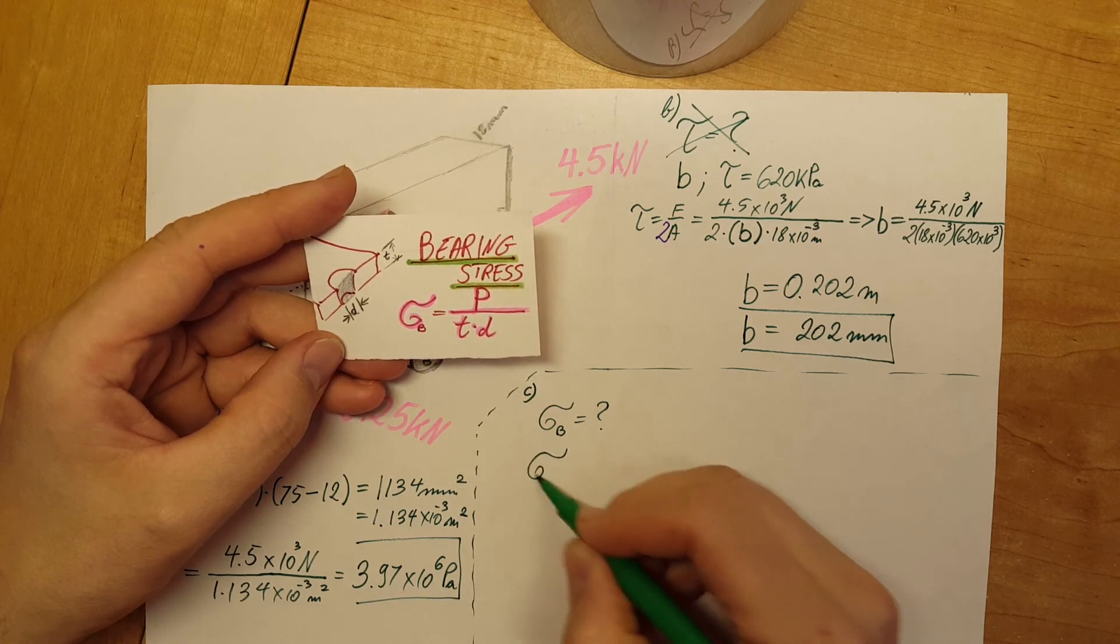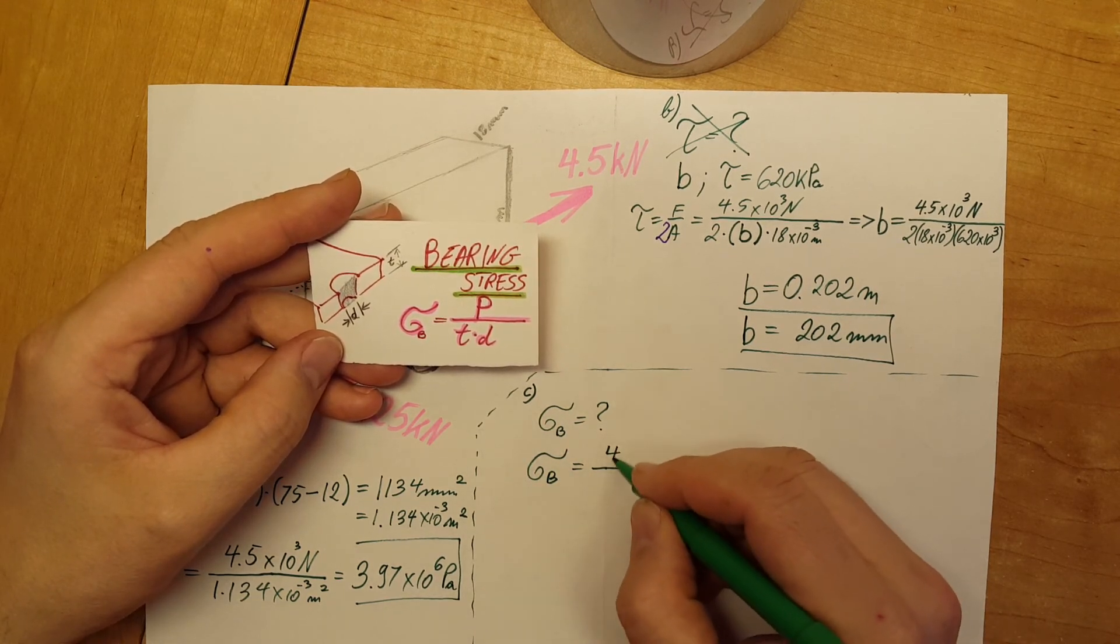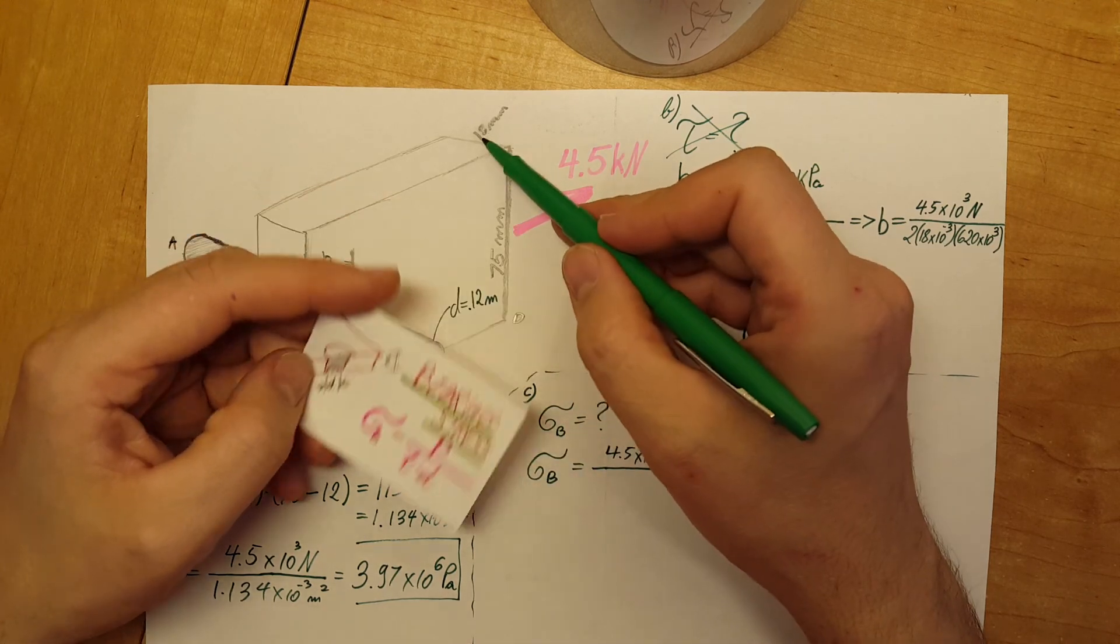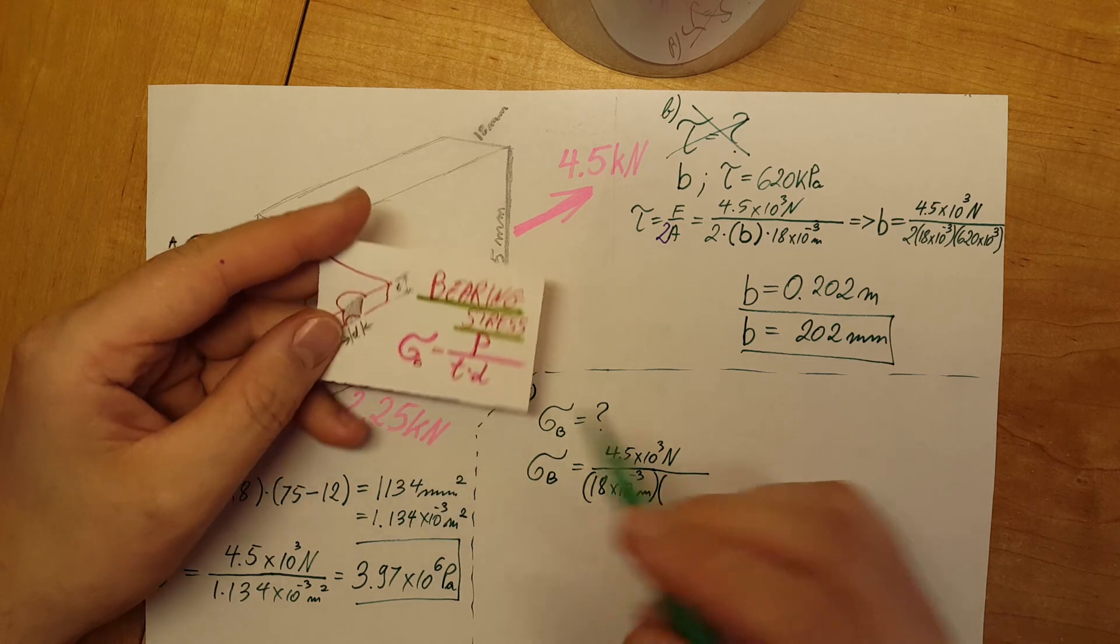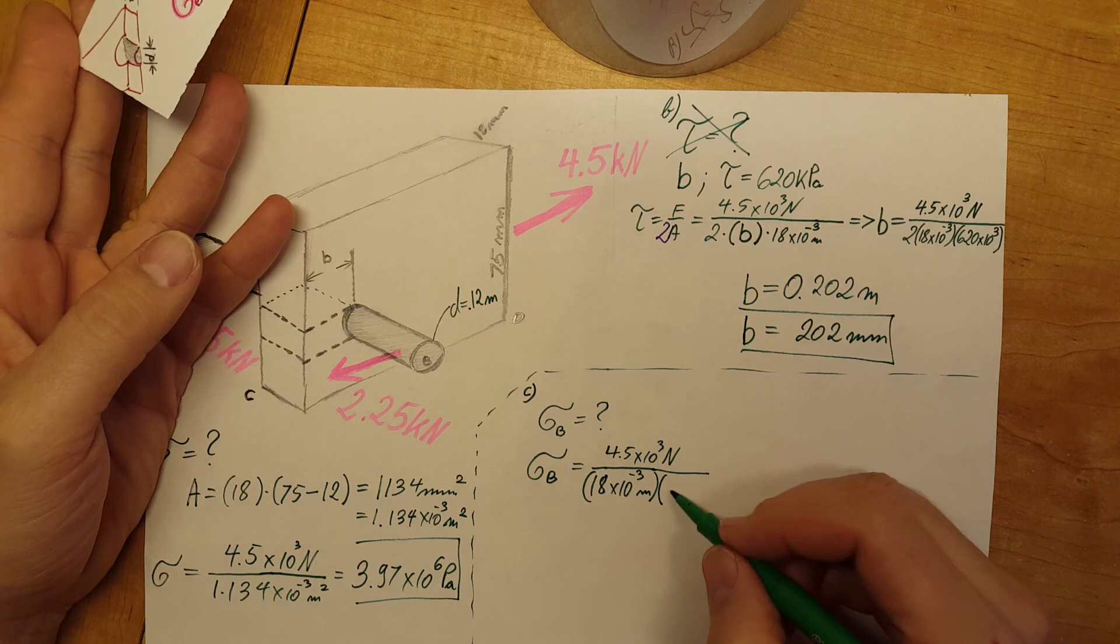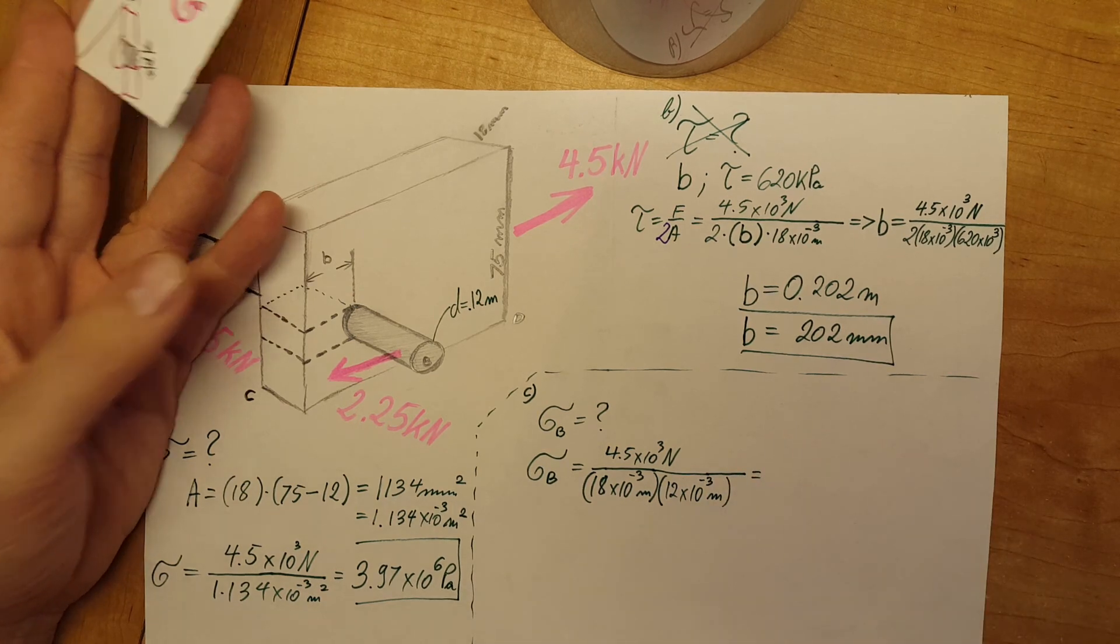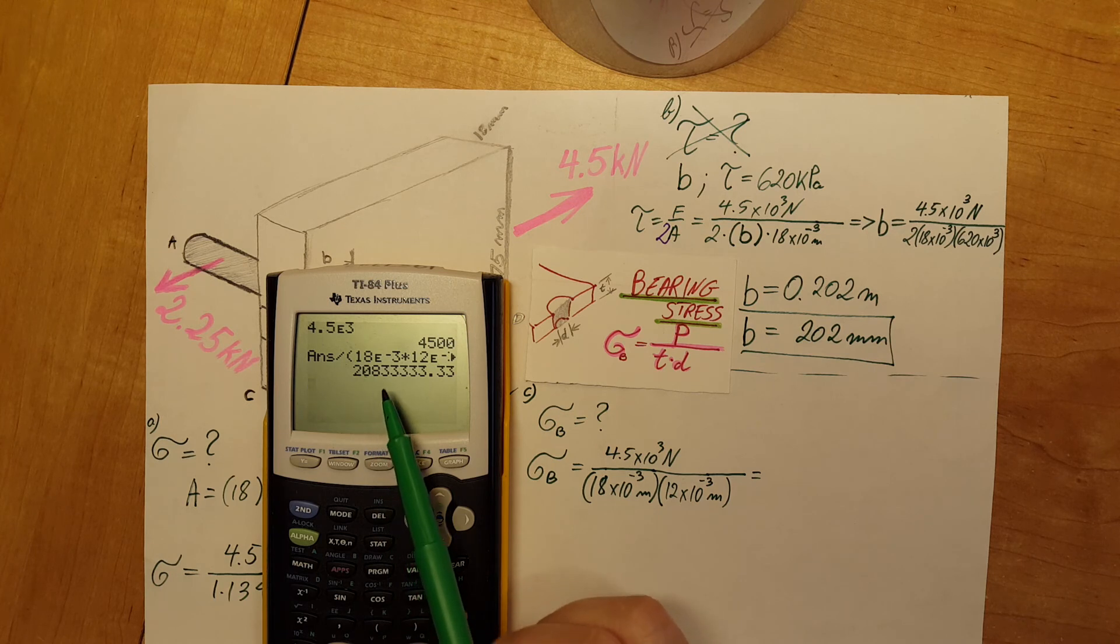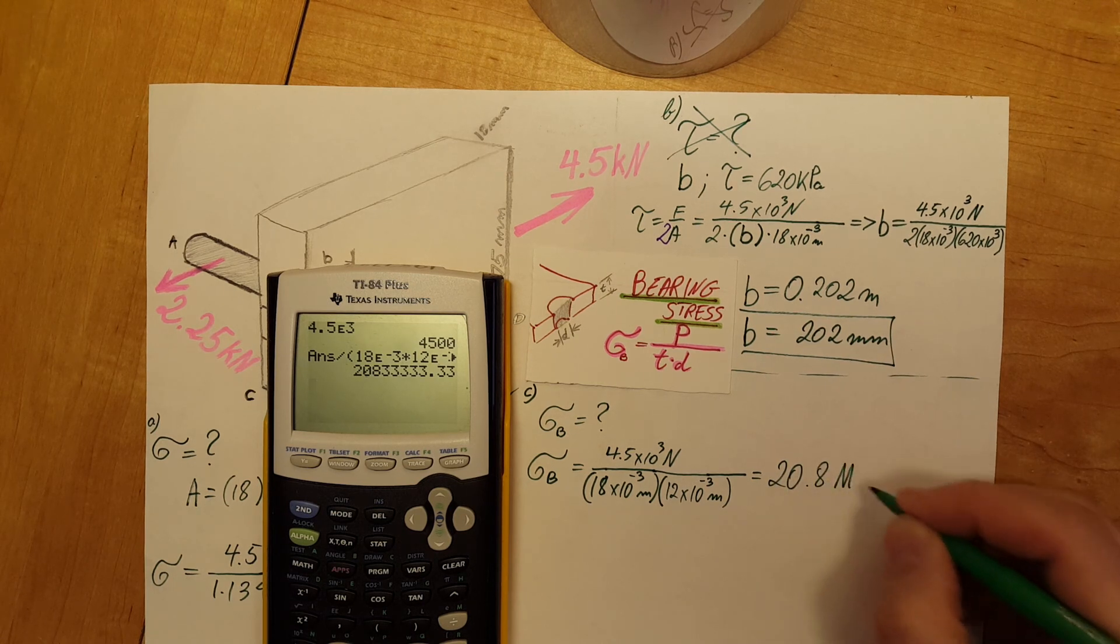In our situation, the bearing stress would be equal to the force, 4.5 times 10 to the third newtons. Our thickness is given as 18 millimeters, so 18 times 10 to the negative 3 meters, times the diameter of our steel rod, 12 millimeters, so 12 times 10 to the negative 3 meters. Now with the calculator we can find our final value, 20,833,333 pascals. I'm going to convert this into megapascals so we don't have to write so much, and that's going to be 20.8 megapascals.